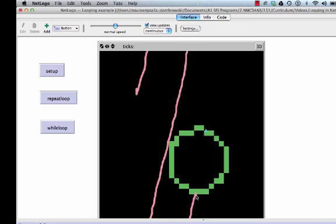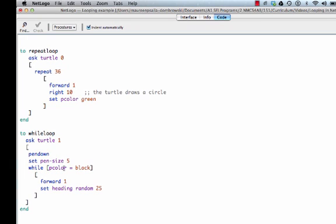Or, until the patch underneath the turtle was no longer black. And then it stopped by itself, because the conditional, while p color, which is the color underneath the turtle, is black, then keep doing this loop. So, that's how a while command works.